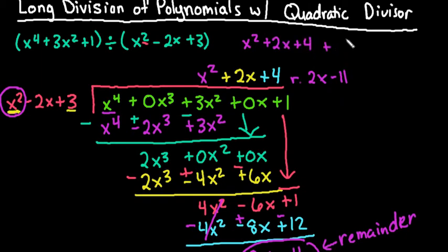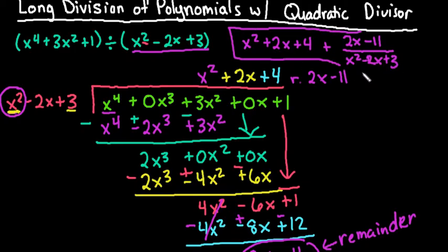And then we would take the remainder, the 2x minus 11, and write it as a fraction over the divisor. So we would just do over x squared minus 2x plus 3. And this would be your final answer.